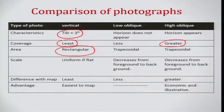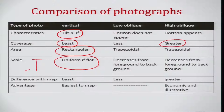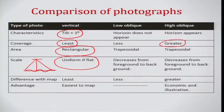Scale will be almost uniform if the terrain is flat; otherwise the scale will change. If the terrain is undulating, the height or scale is different at various points, but you can average it out. For flat terrain, the photograph will have very uniform scale. In the case of low oblique photographs, scale decreases from the foreground to the background.